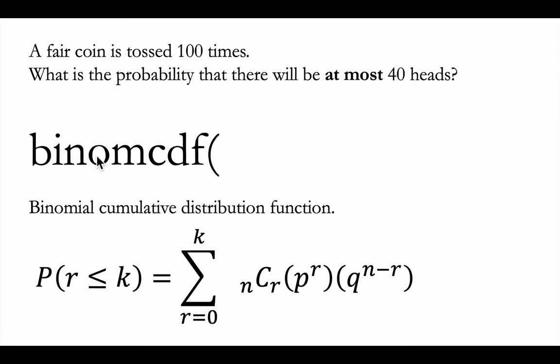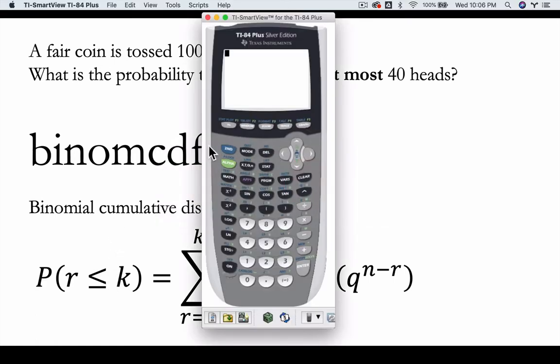And that's the binom CDF function, and we can do that fairly quickly on a graphing calculator. How do we do that? Let's take a look. So we hit second variables and I go to alpha B, choice B on this list. That's my binom CDF, and the first number I enter will be the number of trials, which in this case is a hundred.